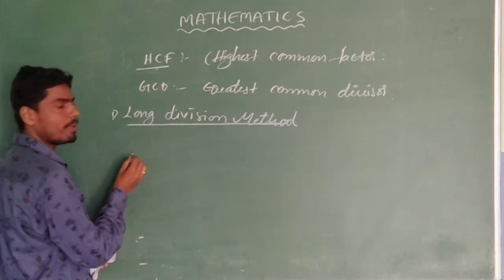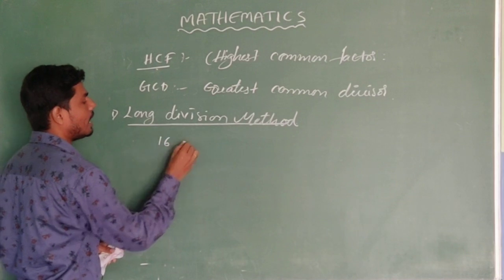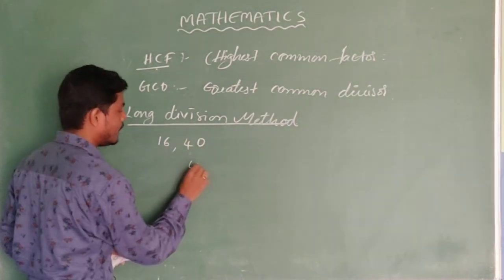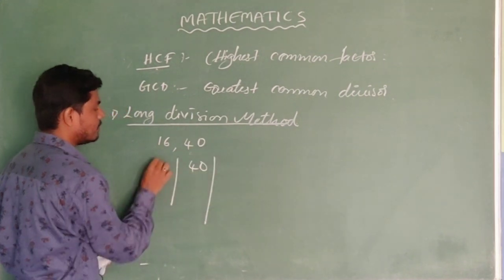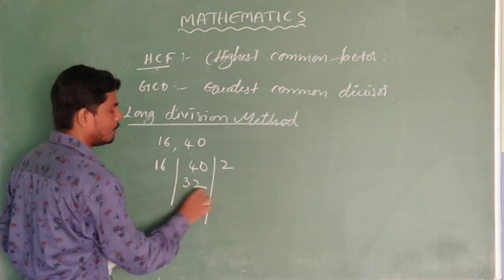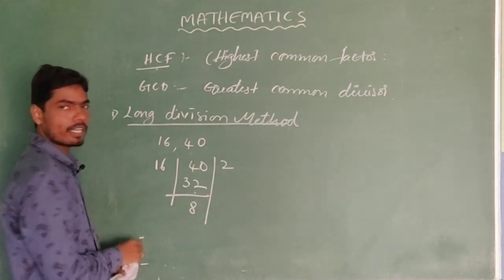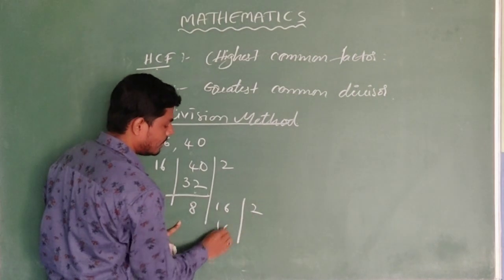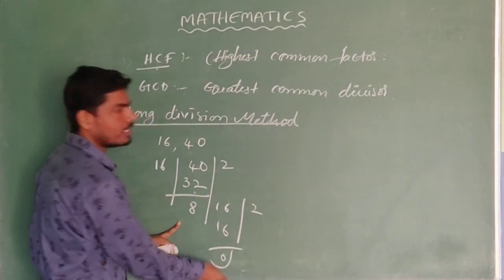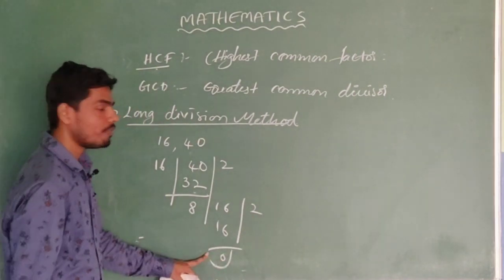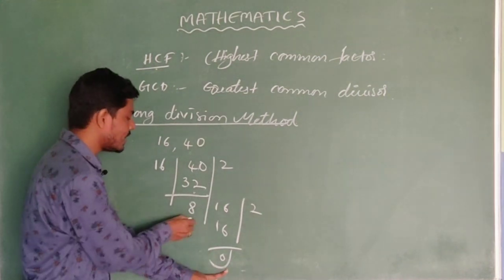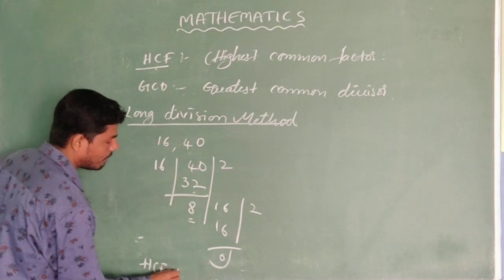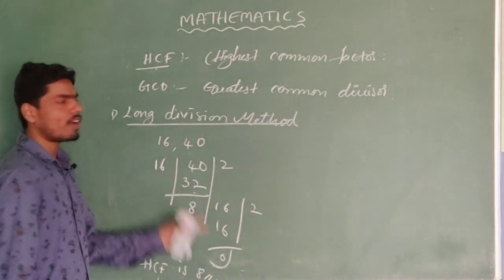Let's find the HCF of 16 and 40. Take the greatest number. Using Long Division: 40 divided by 16 gives quotient 2 and remainder 8. Next, take 16 and divide by 8: 16 divided by 8 gives remainder 0. Finally, we got the remainder 0. So when we are dividing with 8, we got remainder 0. That is why 8 is called the HCF. The required HCF for these two numbers is 8. This is the first method.